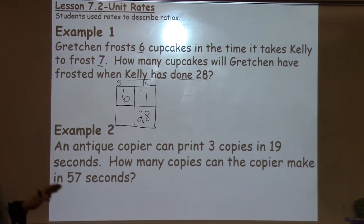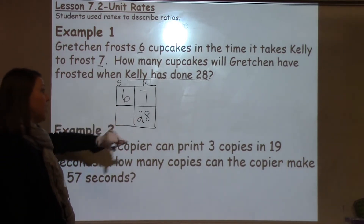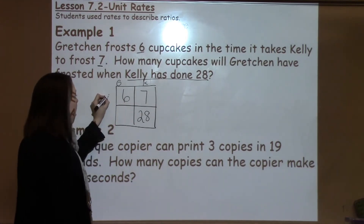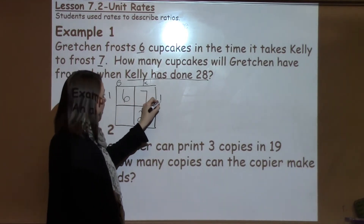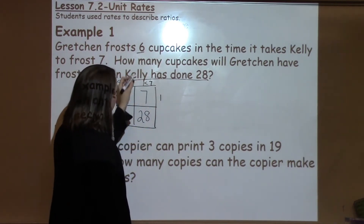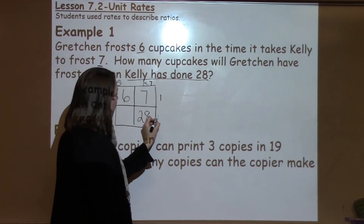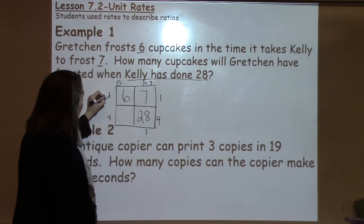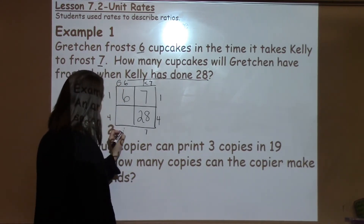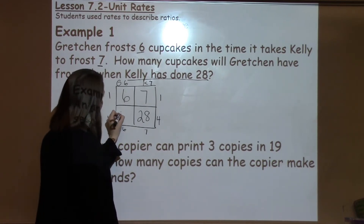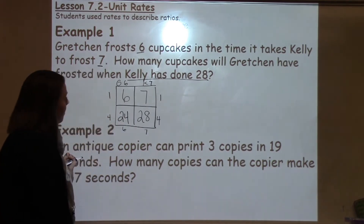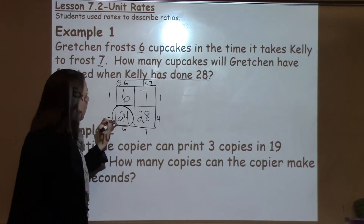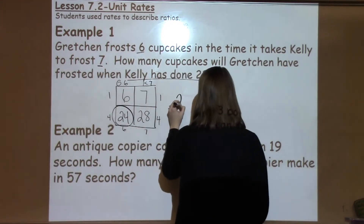Now I simply solve the factor puzzle to figure out how many she will have frosted when Kelly's done 28. When I look at 6 and 7, I know the only thing they have in common is 1s, so I'm going to shoot those 1s across. 1 times 7 is 7 — bring down my 7. 7 times 4 is 28, so I shoot my 4 across. 1 times 6 is 6 — bring that 6 down. And 6 times 4 gives me 24. So when Kelly has done 28, Gretchen will have done 24 cupcakes.